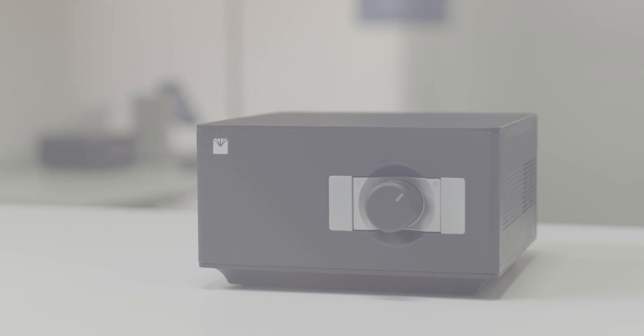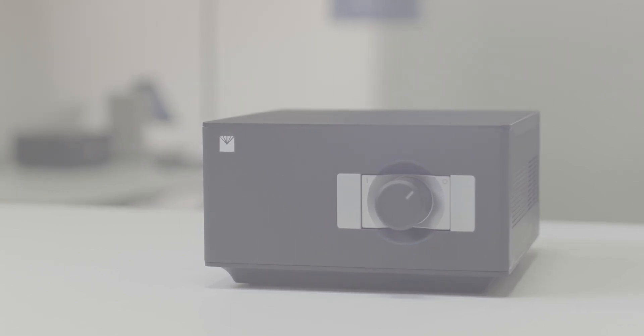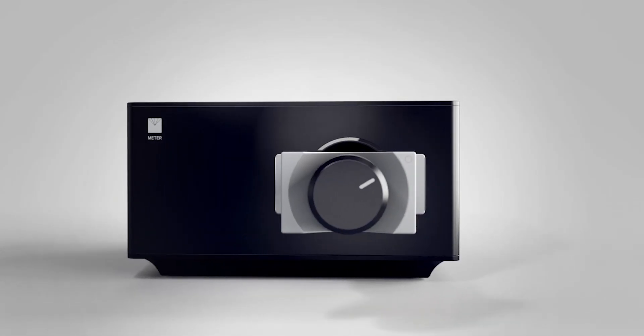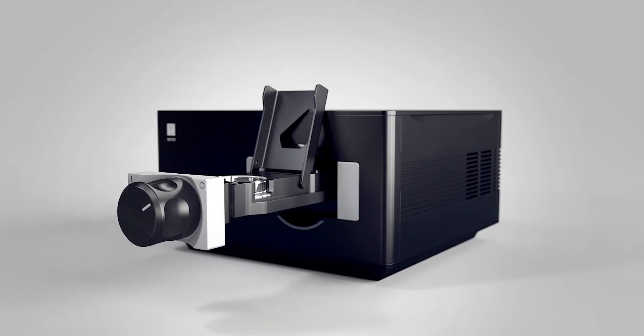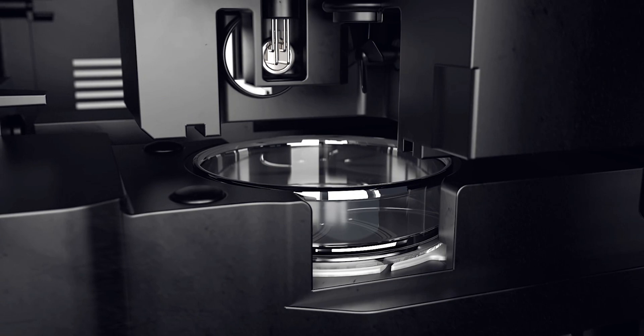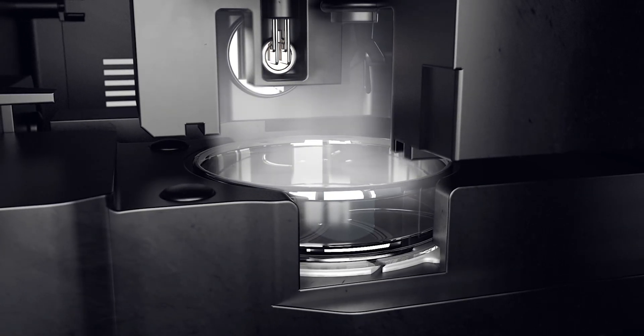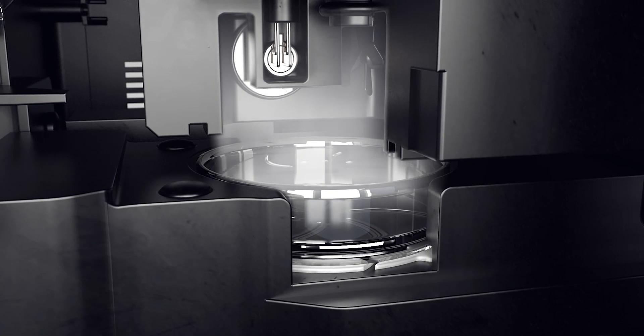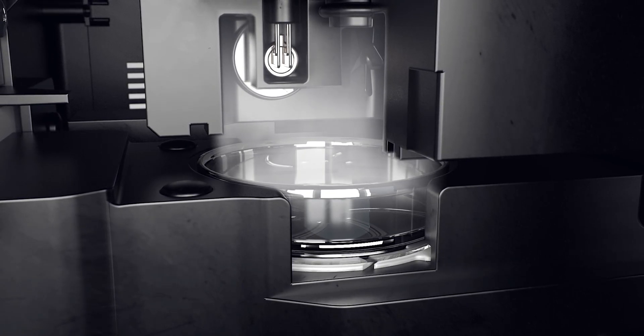The Aqualab 3 uses a chilled mirror method to measure water activity. To understand how it works, let's look at the inside of the sample chamber. When a sample is put into the chamber and the block is sealed, it comes to vapor equilibrium. Water molecules enter the air above the sample, and then the mirror is chilled until dew forms. The chilled mirror method is a primary measurement method, and it's the fastest, most accurate way to measure water activity.